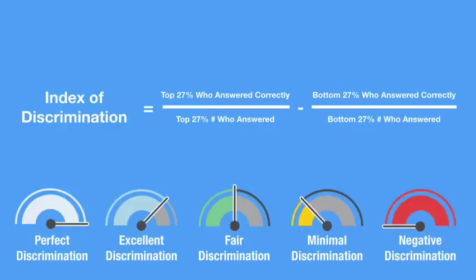A question's ability to discriminate between the high and low performers by comparing the number of students getting the answer correct with their total quiz score.